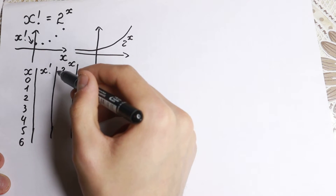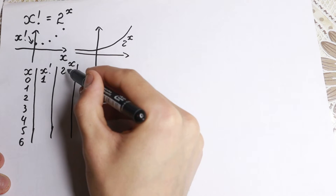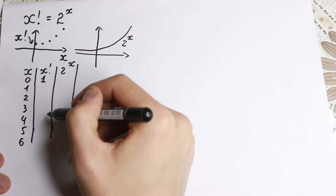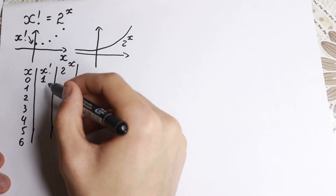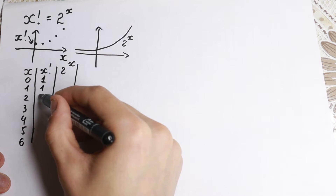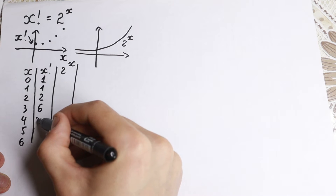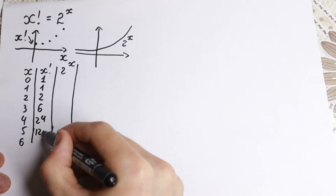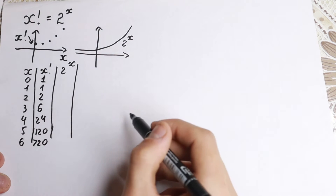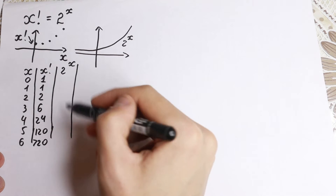Let's start with factorials only. So: 0 factorial is 1, 1 factorial is 1, 2 factorial is 2, 3 factorial is 6, 4 factorial is 24, 5 factorial is 120, and 6 factorial is 720. This is our x factorial column.